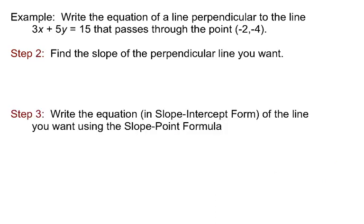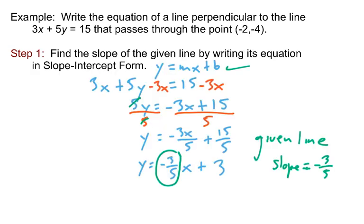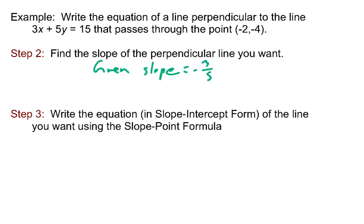Step two: find the slope of the perpendicular line that you want. So the line that we started out with, we just figured out that its slope was negative 3/5. Perpendicular lines have opposite reciprocal slopes. So the line that I want, that I'm trying to create, to get its slope I will change the sign from negative to positive and take the reciprocal of the fraction. Change the sign, invert the fraction. That would be the slope that I want.